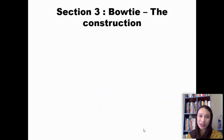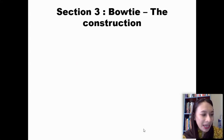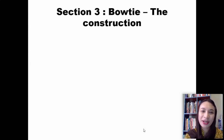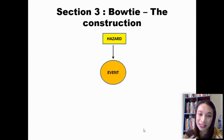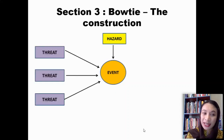We're going to section three — a quick one on how you construct the bowtie. The first thing to construct the bowtie: you need to identify what is the hazard. After you identify the hazard, you need to identify the event of the hazard.